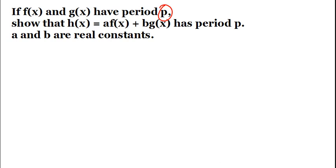We have to show that h(x), which equals a multiplied by f(x) plus b multiplied by g(x), has a period p.